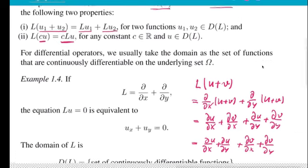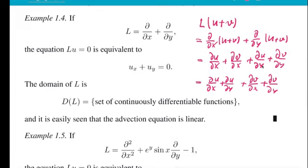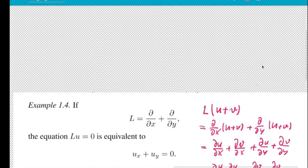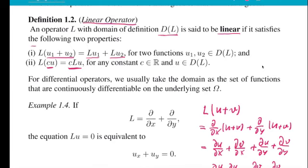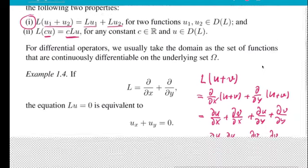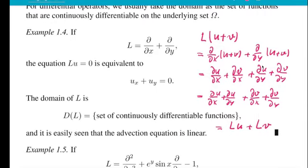And this is in fact the same as L u plus L v. So there was the first condition for linearity as we had it defined. Now the second condition, if you have a constant multiplying there, the derivative is not a product rule because the constant can be just taken out. So the second condition is even easier. That's a linear operator.